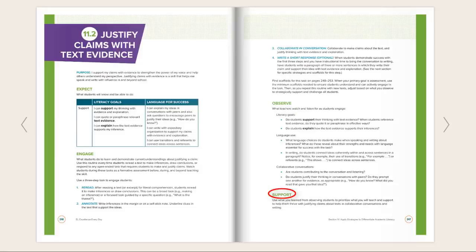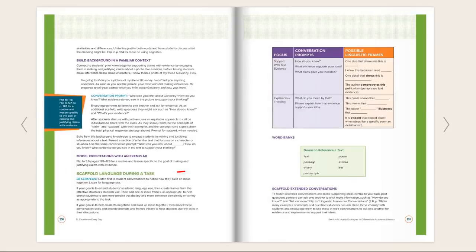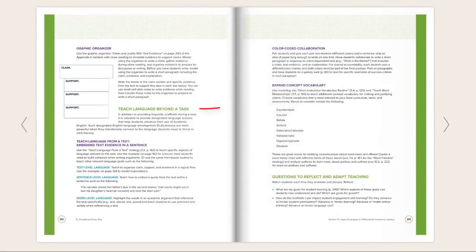The Support heading introduces the most robust section of each chapter. An if-then personalization chart helps us build from what we observe students can do and need, to where we want them to grow to be successful with our specific goals. This section is packed full of lesson-ready resources organized into the same three categories of supports detailed in Section 3: build background, scaffold language during a task, and teach language beyond a task.